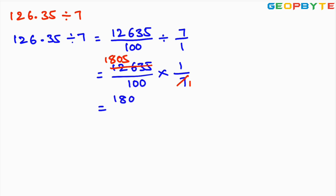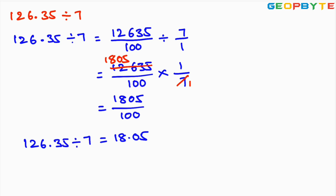We get 1805 divided by 100. Since we are dividing by 100, we need to move the decimal point from right to left by two places and place the decimal point, giving us 18.05. The result of 126.35 divided by 7 is 18.05.